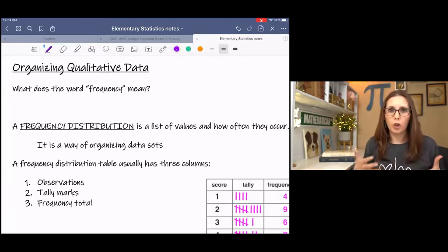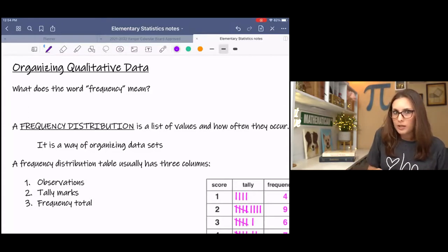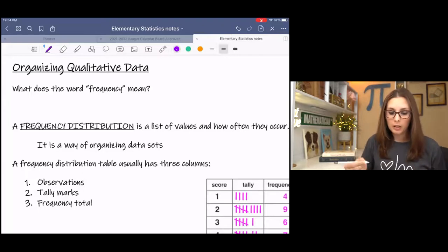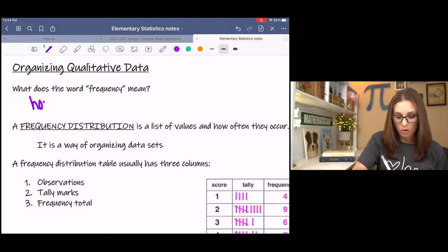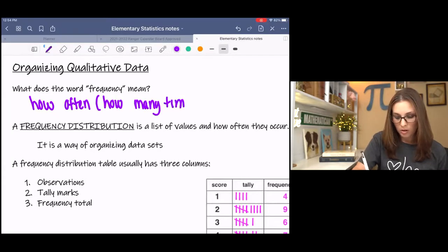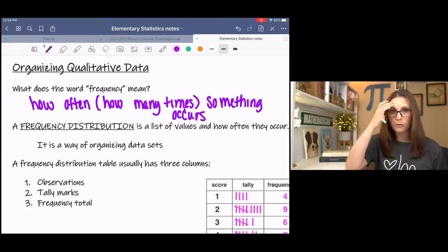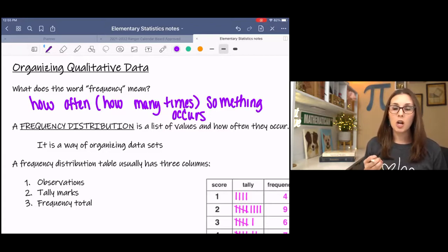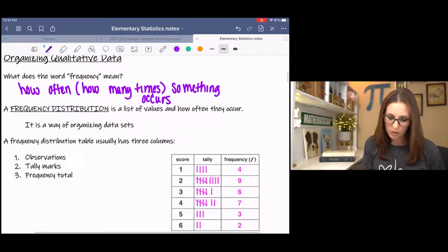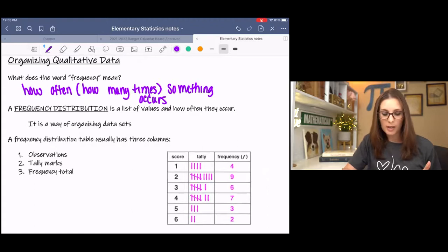If you think about just the word frequency, how frequent something is, what does that mean to you? It should mean basically how often or how many times something occurs. So if we're talking about a frequency table or a frequency distribution, what we're noting in this table is how many times each characteristic occurs. A frequency distribution is a list of values or characteristics and then the number of times that each occurs.